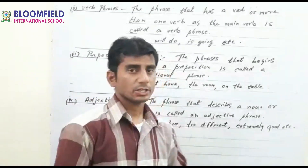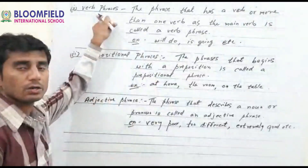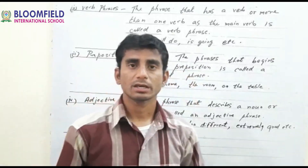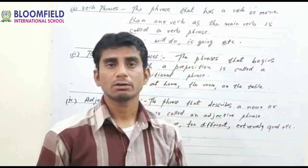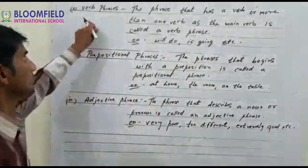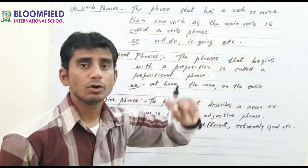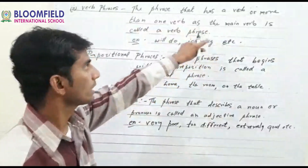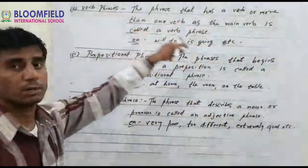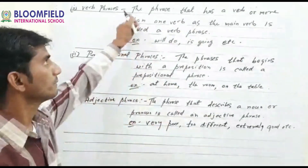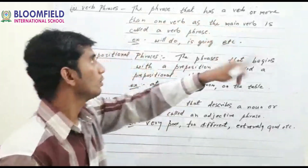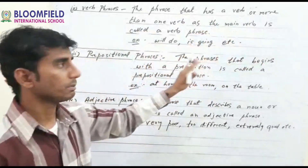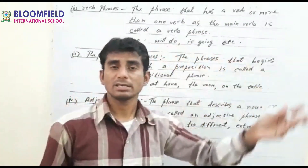Next is verb phrase. The phrase that has a verb, or more than one word in a sentence, as the main word is called a verb phrase. Once again: the phrase that has a verb or more than one word as the main word is called a verb phrase. Examples: will do, is going, is eating, is helping, will sing, etc.